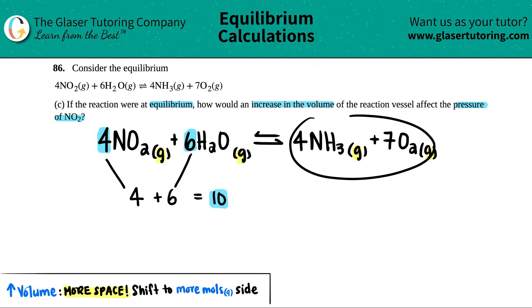Let's do the same thing for the products. There's four moles of NH3 and then seven moles of O2. So four plus seven is 11. 10 versus 11, this side has more moles.